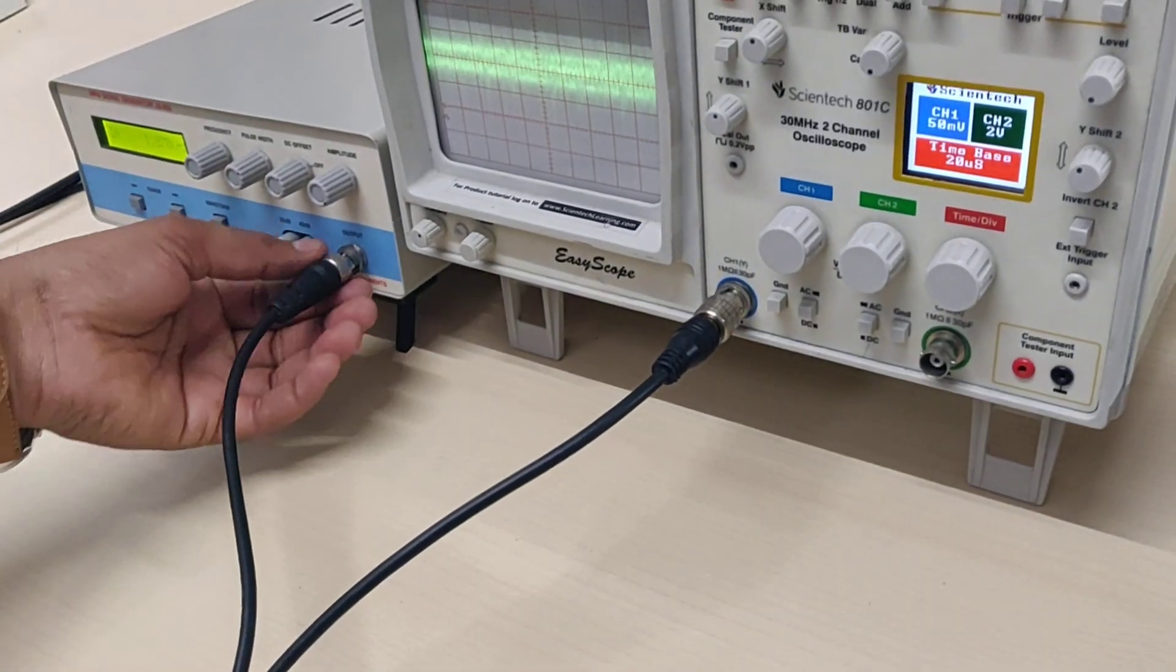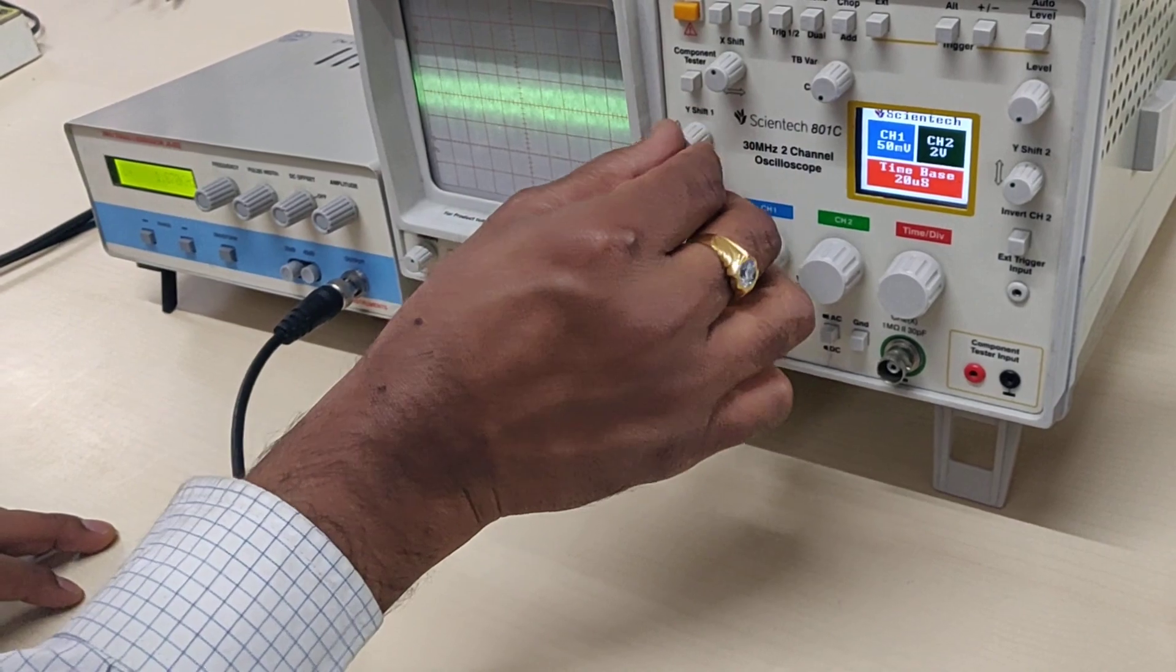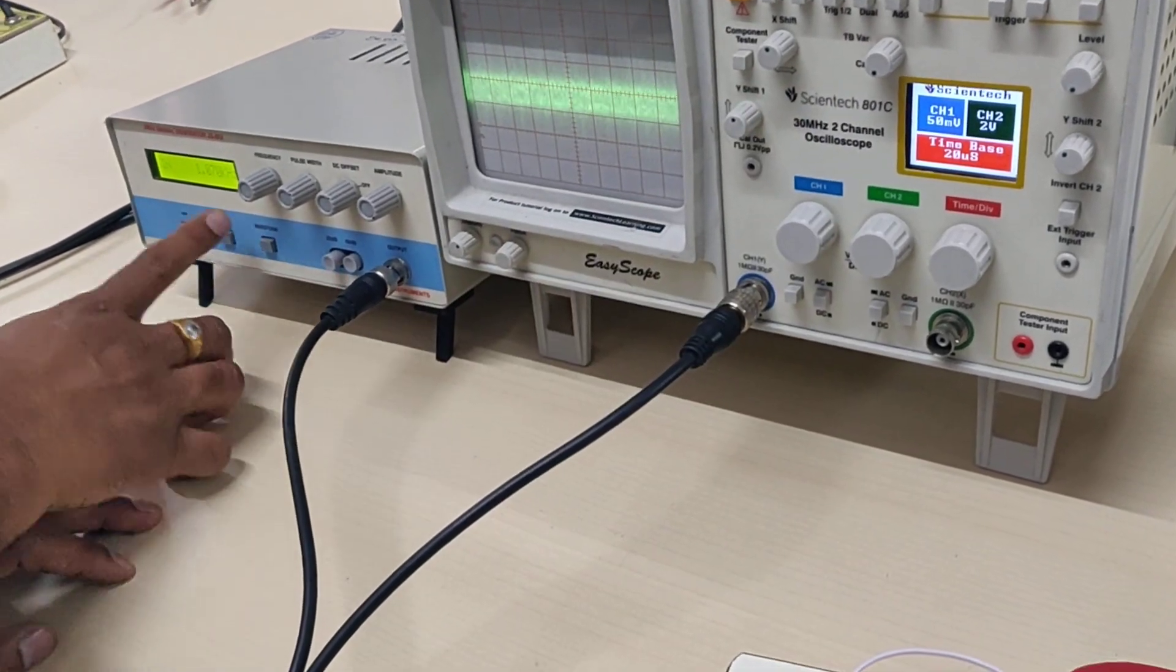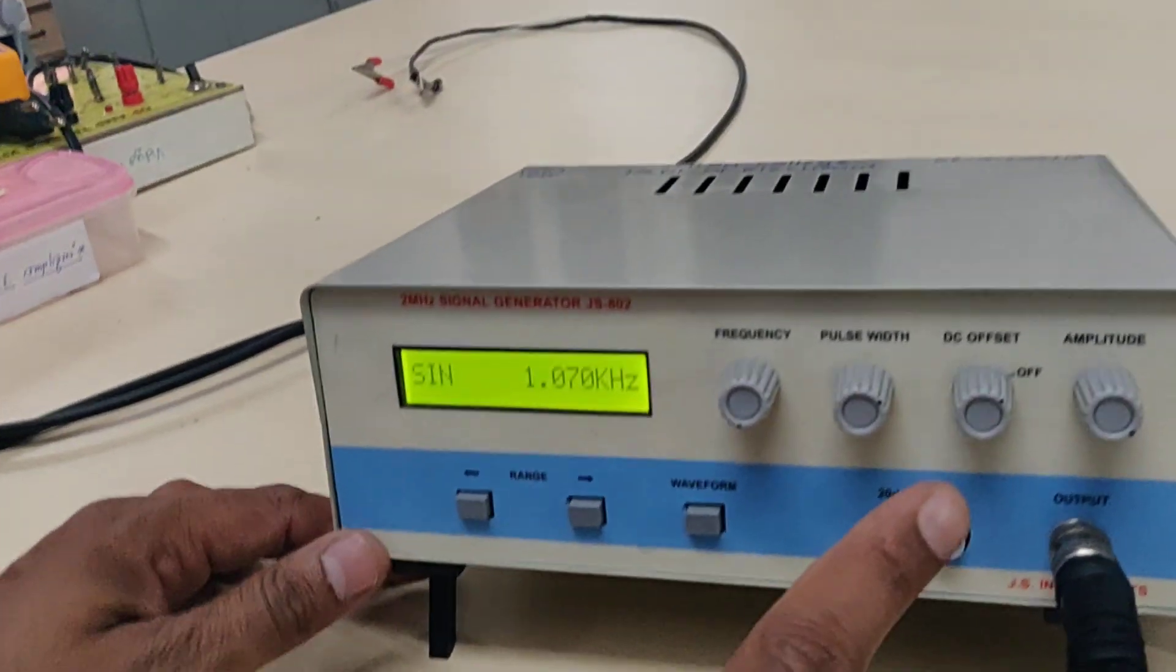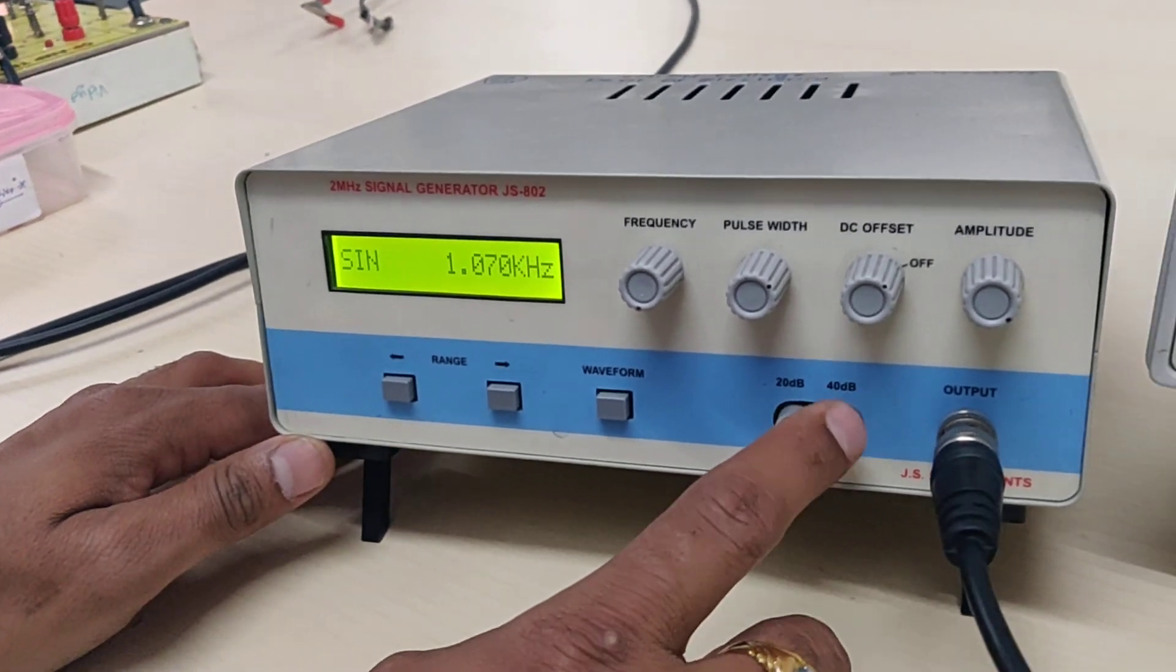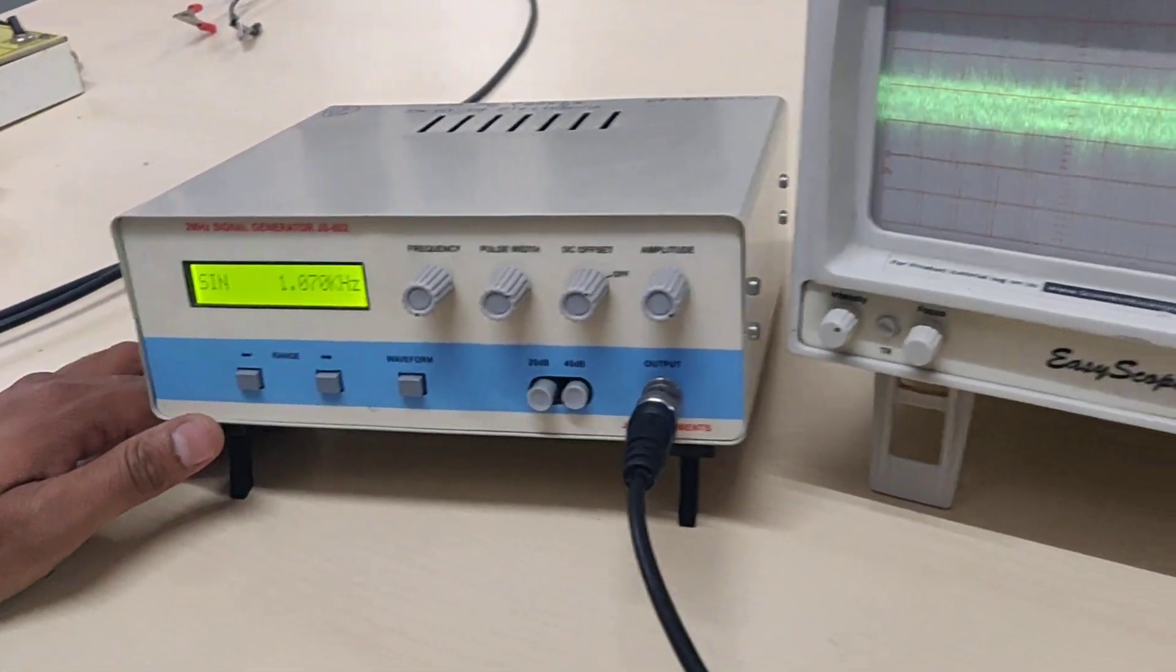We are getting the signal but not a proper signal. We shall make it proper. We wanted to get 50 millivolts. I shall keep 50 millivolts here first.